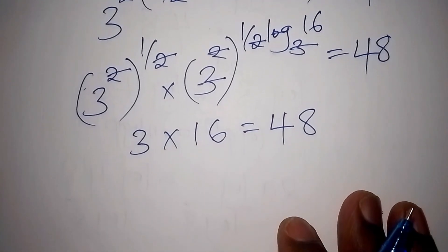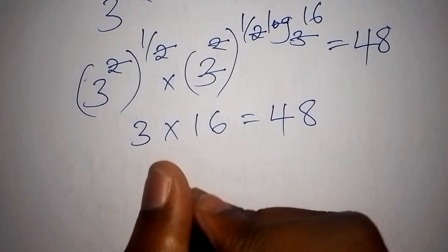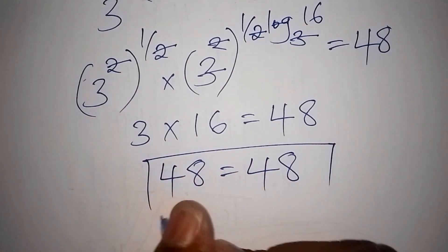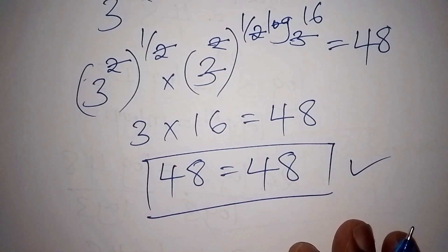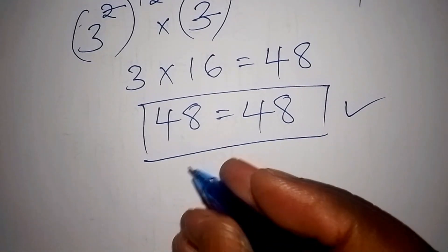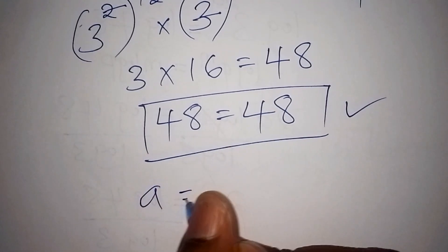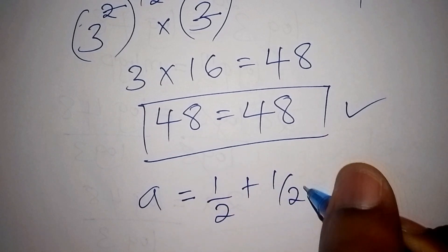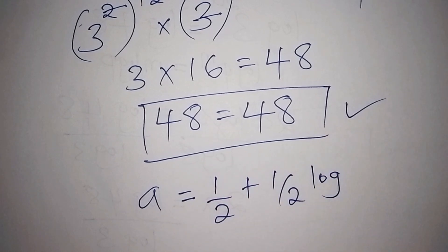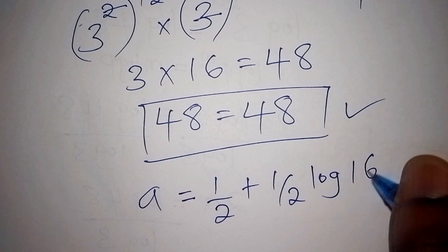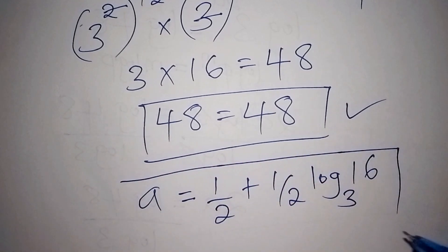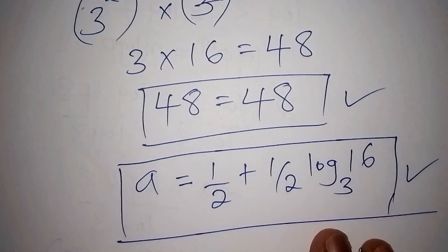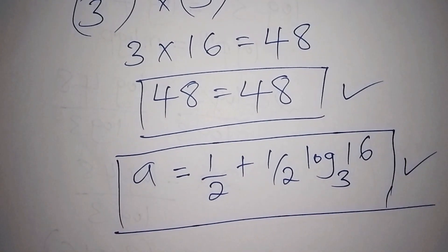3 multiplied by 16 is 48, which equals 48 — confirming our answer is correct. The value for a is one-half plus one-half times log base 3 of 16. If you loved how we worked out this problem, please give us a like and subscribe to the channel. Thank you!